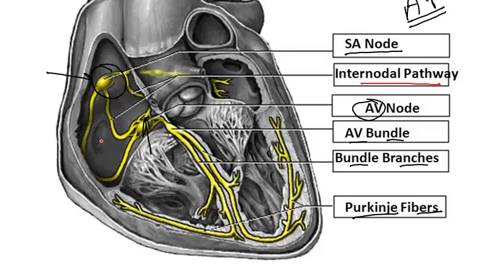The internodal pathways are located in the walls of the atria. They link the SA node to the AV node and distribute the action potential to the contractile cells of the atria. Then the impulse reaches the AV node, which is located in the inferior inter-atrial septum — we call it inter-atrial septum because it is between the two atria.